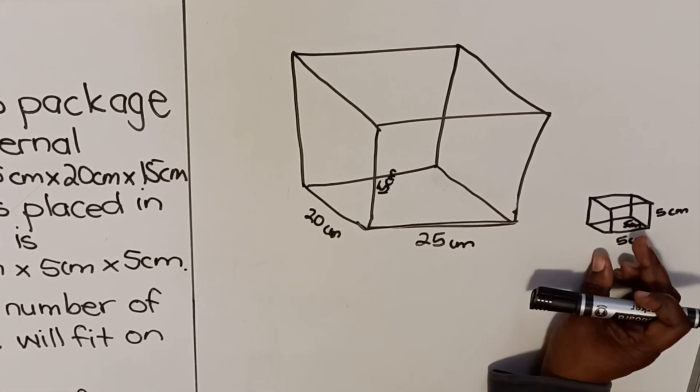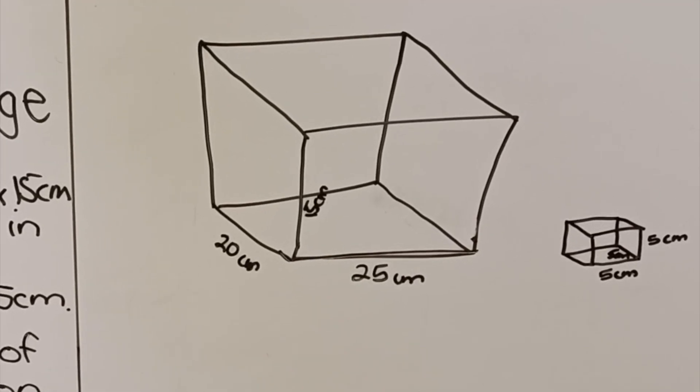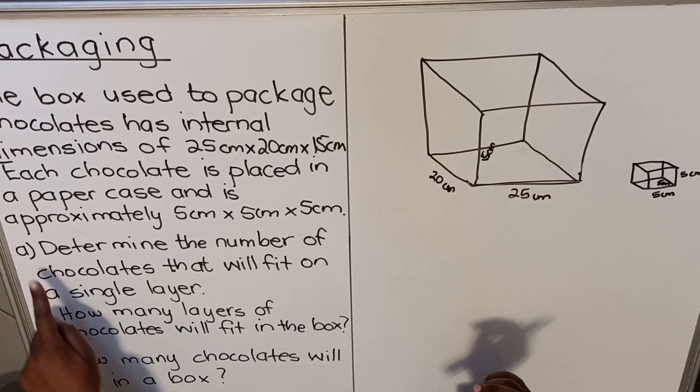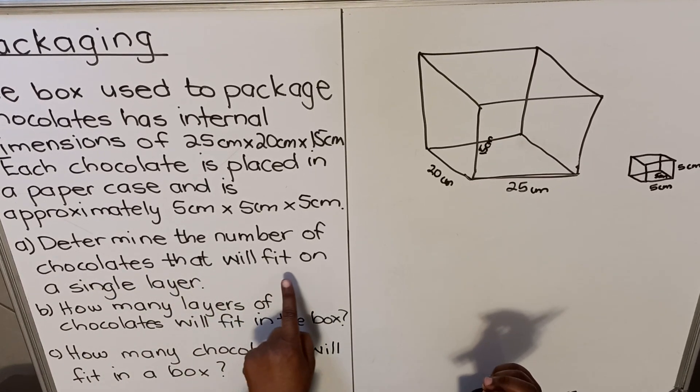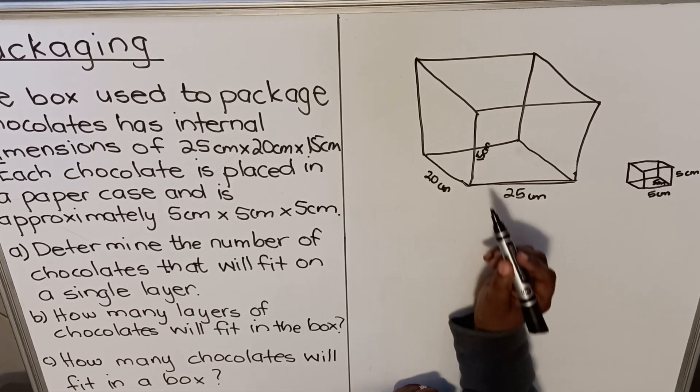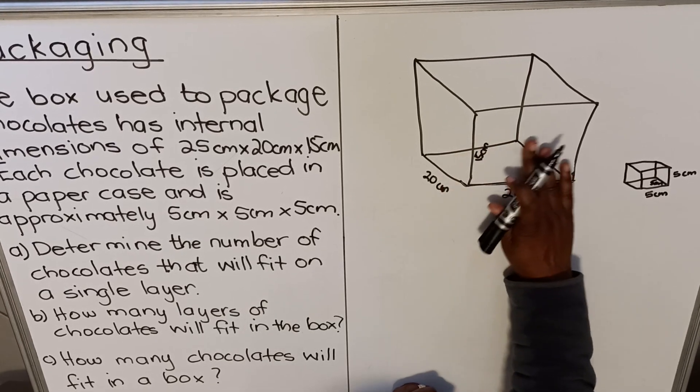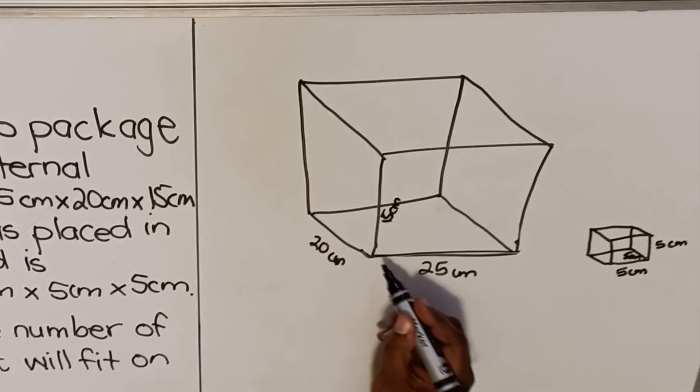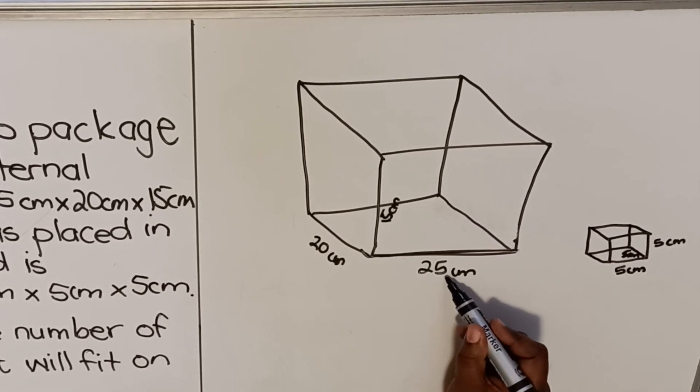So they take these small boxes and pack in the bigger one and then ship them to shops to sell. We need to find out how many. Let's look at A. A says determine the number of chocolates that will fit on a single layer. What are they asking us? They are asking us at the bottom of the box how many chocolates can fit the bottom of the box.